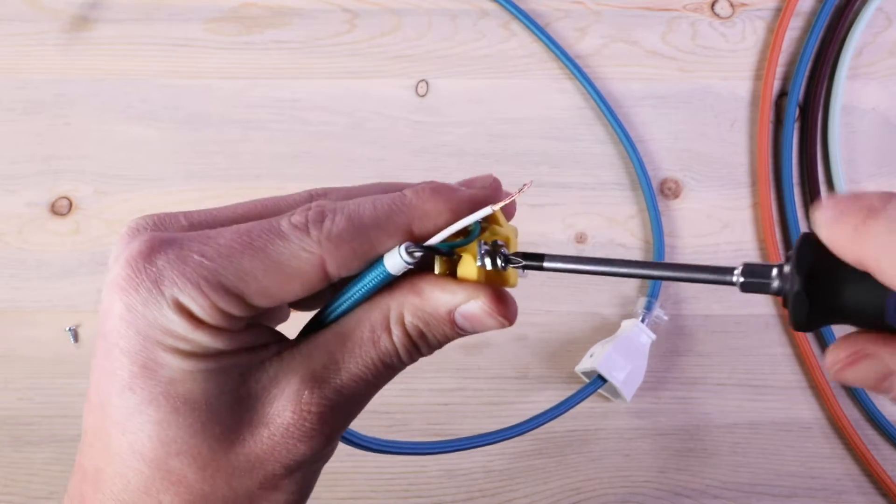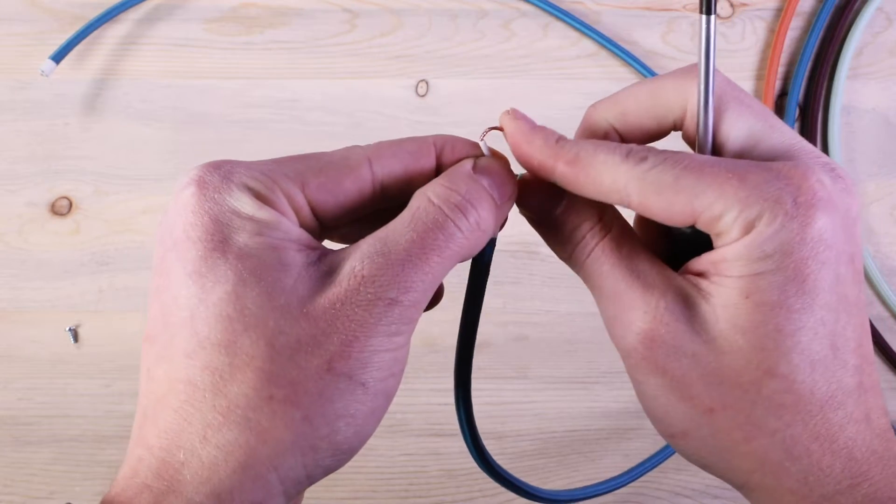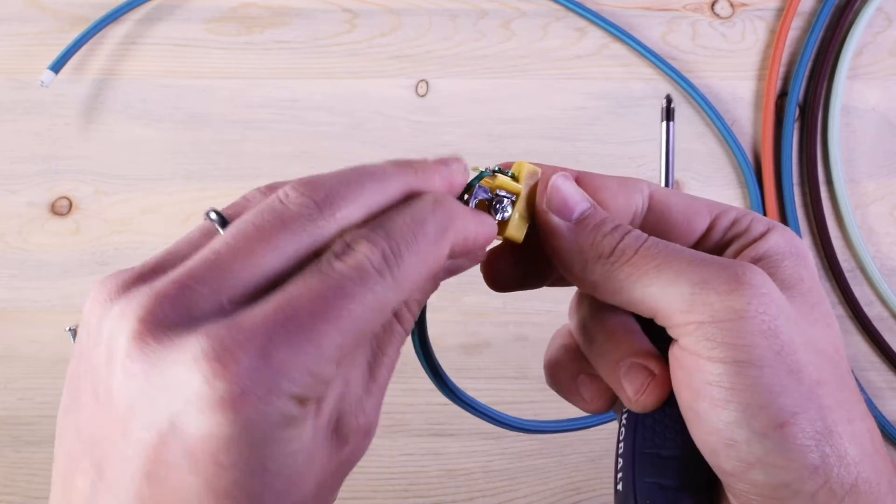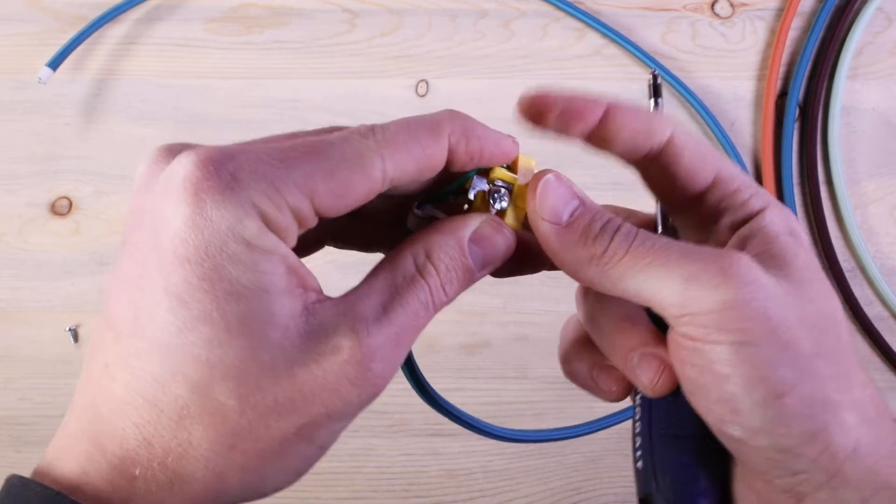Lastly, repeat these steps for the white negative wire, which will be secured under the silver screw and is behind the plug blade that goes into the left-hand slot of the wall outlet.